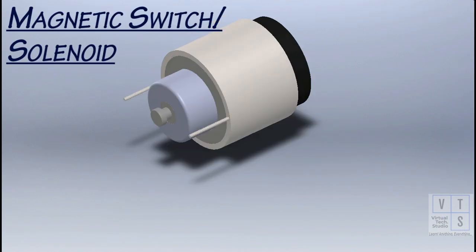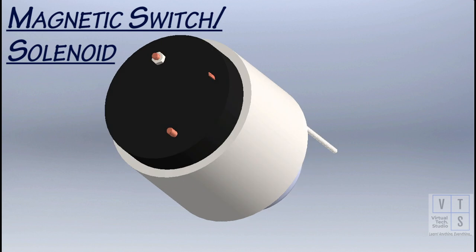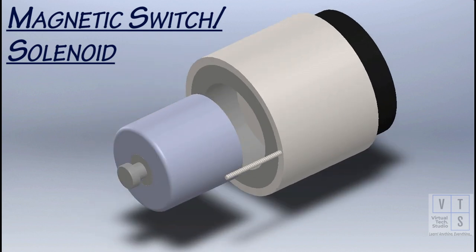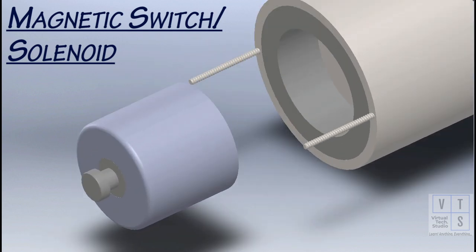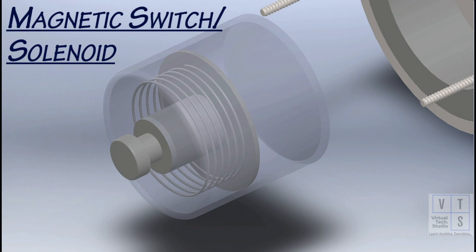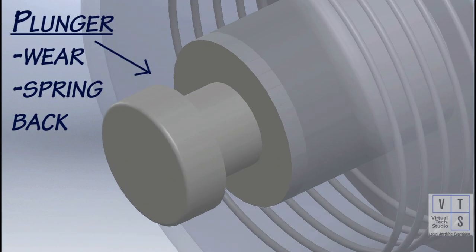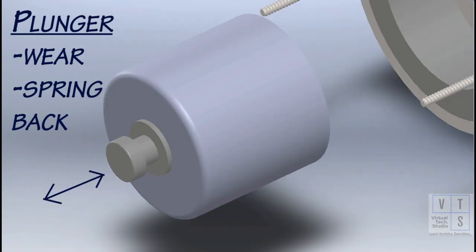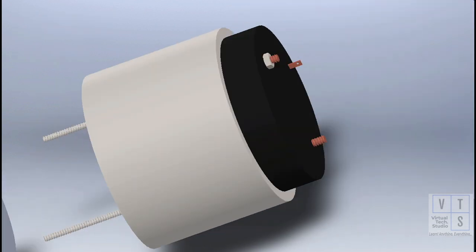We start our inspection process with the magnetic switch, also known as solenoid. Inspect plunger for wear. Replace if necessary. Pull out the plunger and release it. The spring inside should move the plunger back to its original place quickly. If not, replacement is necessary.